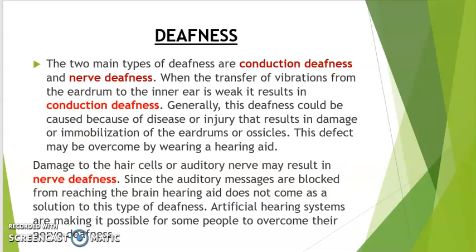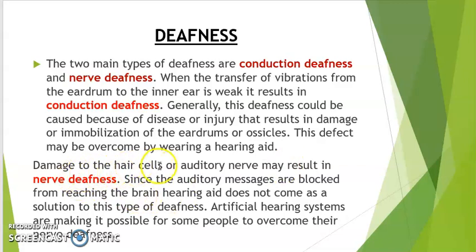Let us see about deafness. The two main types of deafness are conduction deafness and nerve deafness. When the transfer of vibrations from the eardrum to the inner ear is weak, it results in conduction deafness. This could be caused by disease or injury that results in damage or immobilization of the eardrums or ossicles. This defect may be overcome by wearing a hearing aid. Damage to the hair cells or auditory nerve may result in nerve deafness. Since the auditory messages are blocked from reaching the brain, a hearing aid does not help. Artificial hearing systems are making it possible for some people to overcome their nerve deafness.